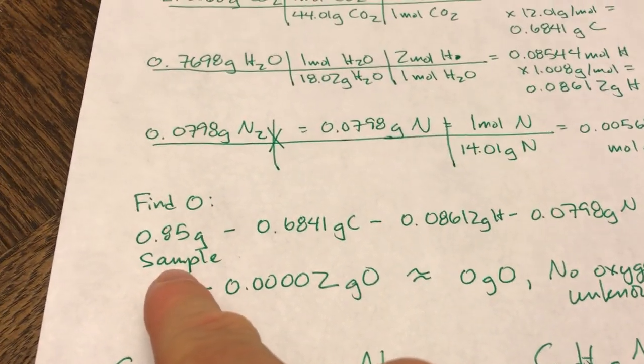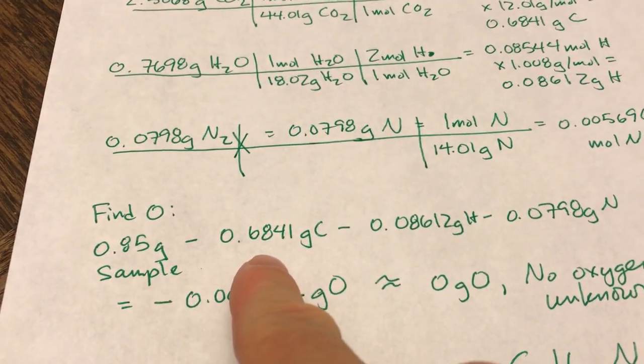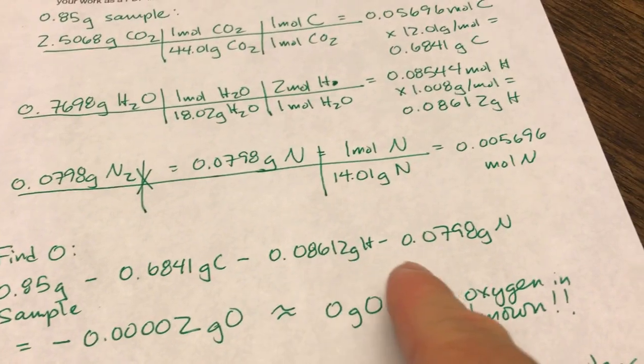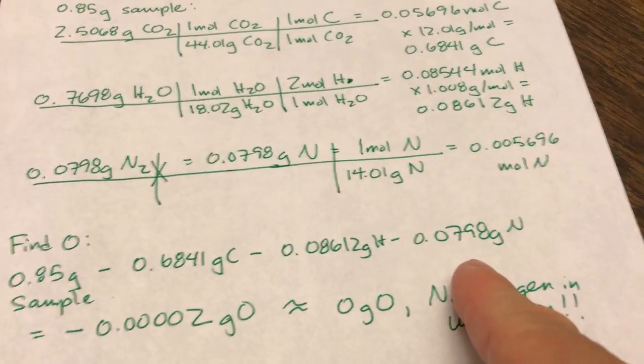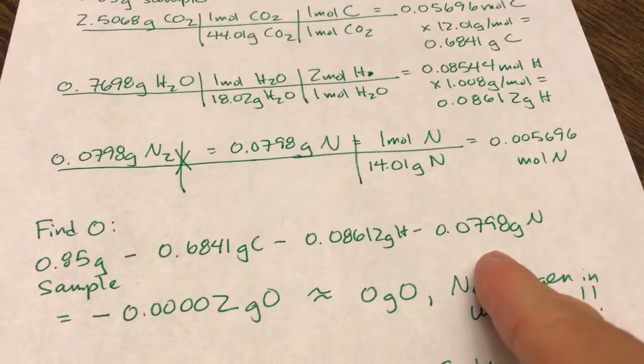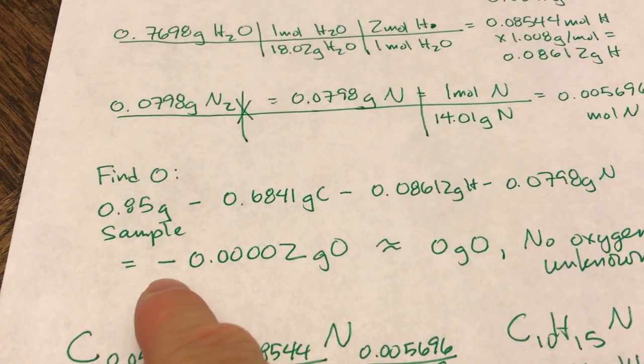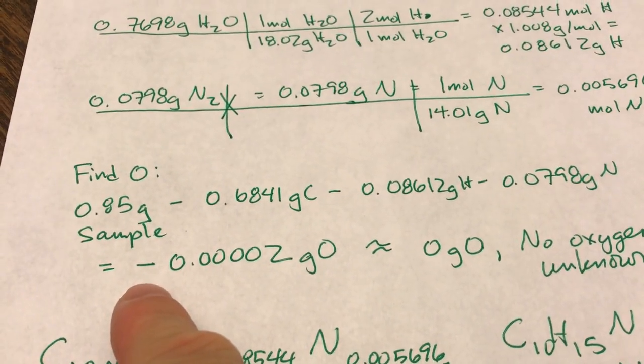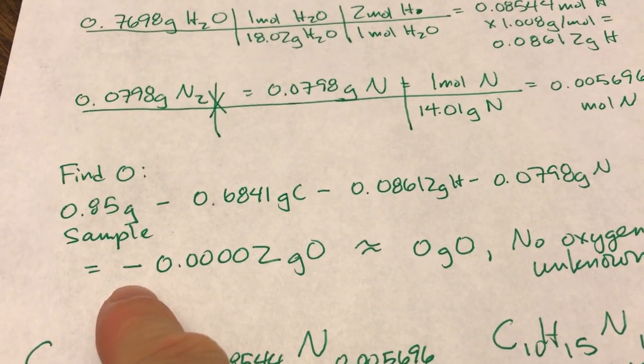I took my grams of my sample, subtracted off my grams of carbon, hydrogen, and nitrogen. So those are the three elements that I'd found so far. And when I did that, I got minus 0.00002 grams of oxygen.